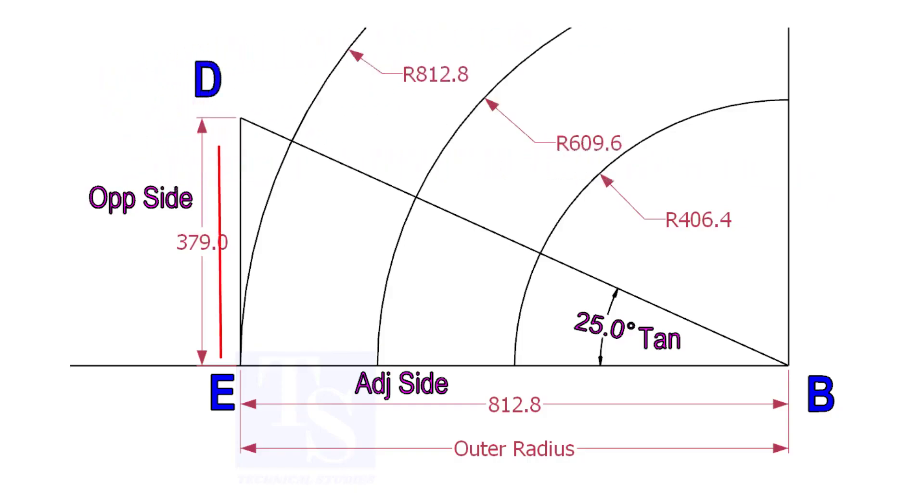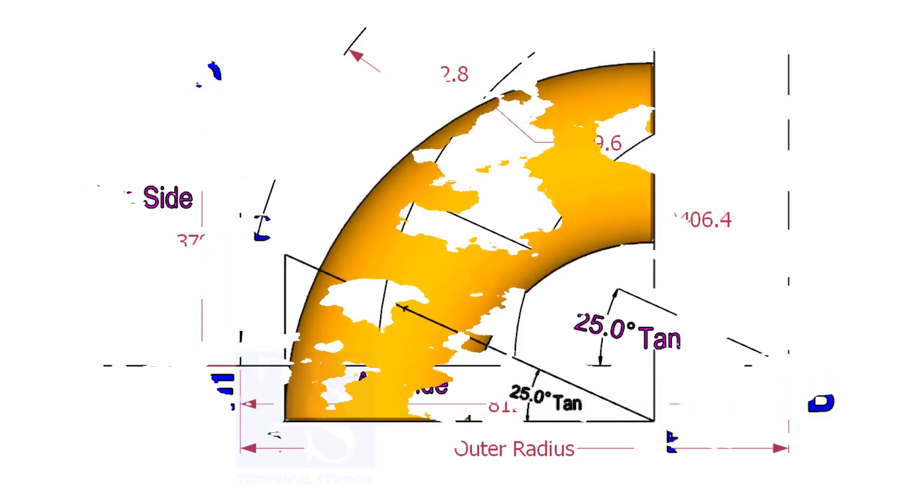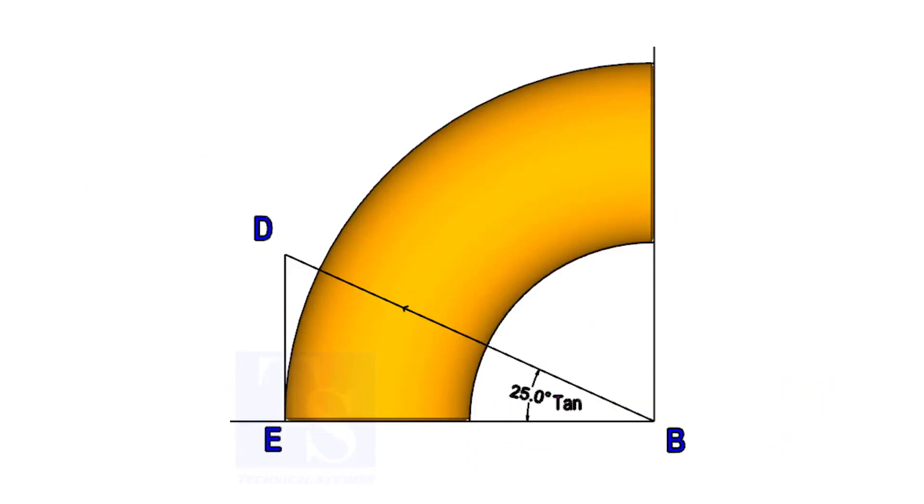Draw the line ED vertically and the slant line DB. I hope now you will be able to draw a line in any degree. Now, put the elbow exactly on the layout as shown.